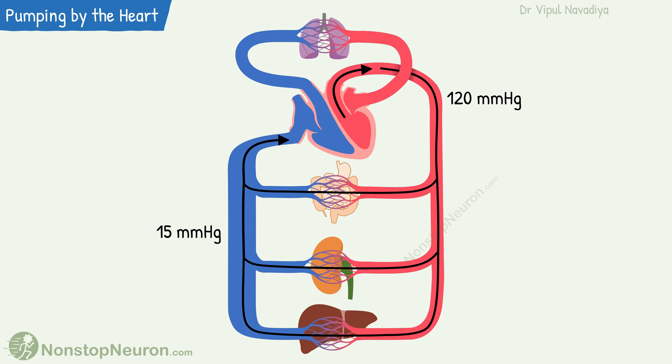We still have about 15 mmHg pressure in veins, while pressure in the right atrium is near zero mmHg. This pressure gradient drives the movement of blood from veins to the heart and thus determines the venous return. Obviously, the more the venous pressure, the more the venous return.